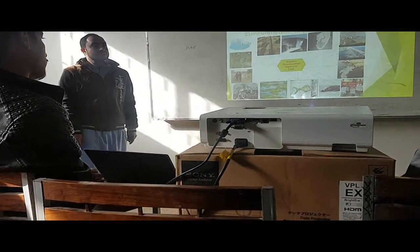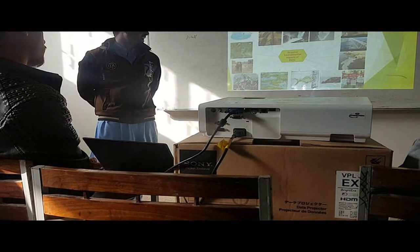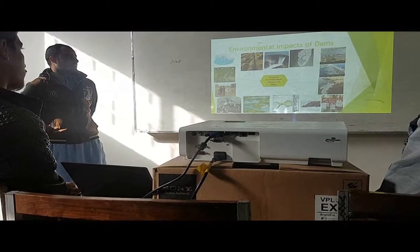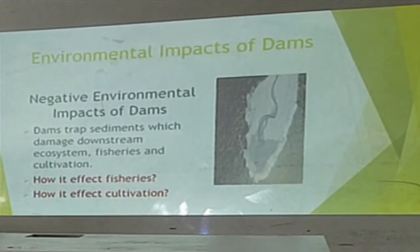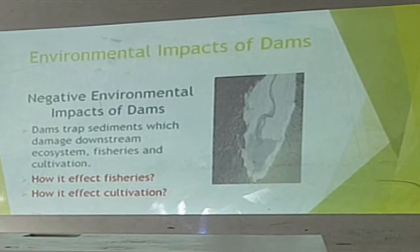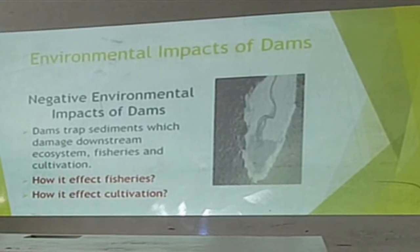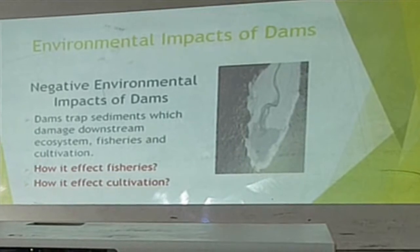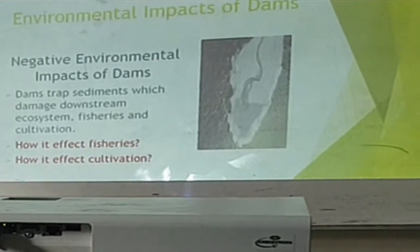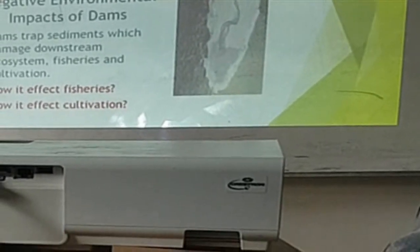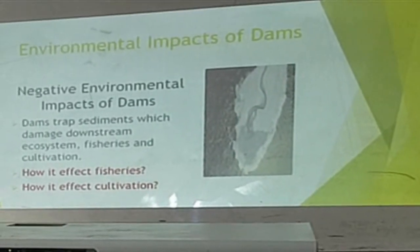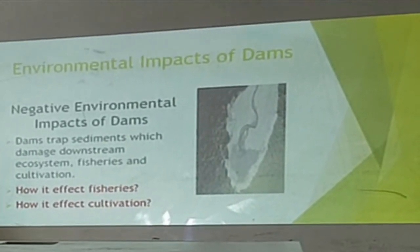Now these are some negative environmental effects of dams, and we will discuss them one by one. Dams trap sediments which damage downstream ecosystems, fisheries, and cultivation. The question is how it affects fish life. We know that most fish depend on clay. The wall of the dam stops the movement of clay downstream, and in this way downstream fish are affected.